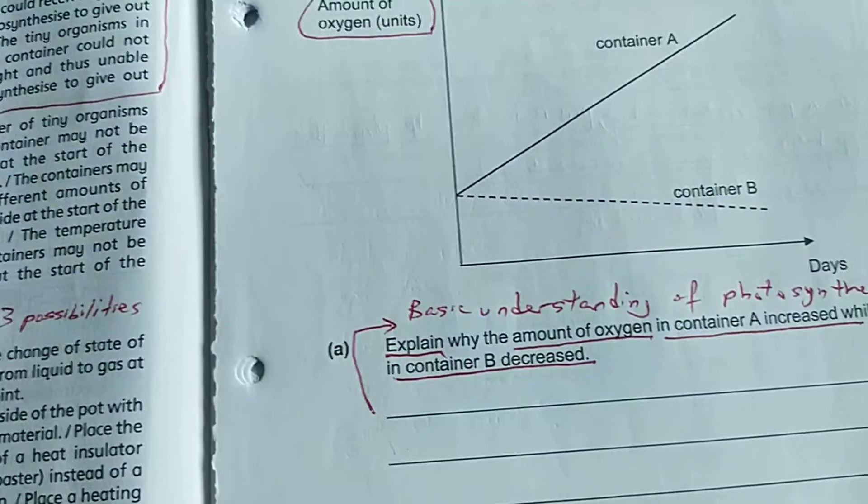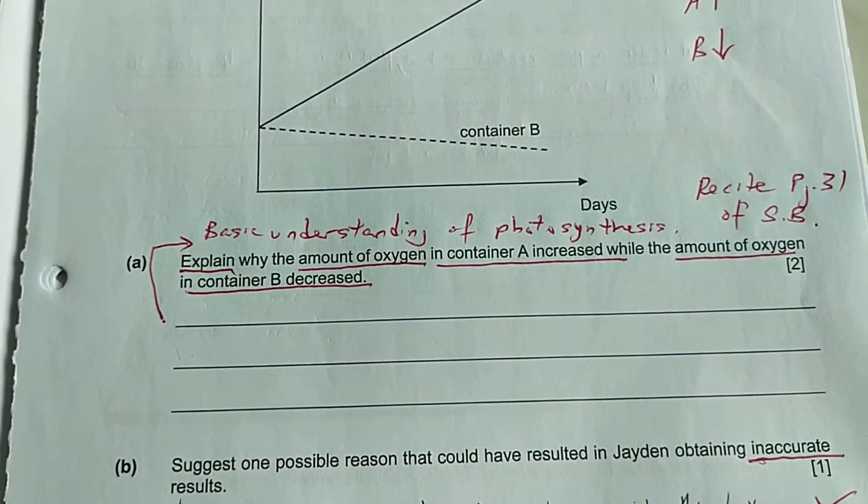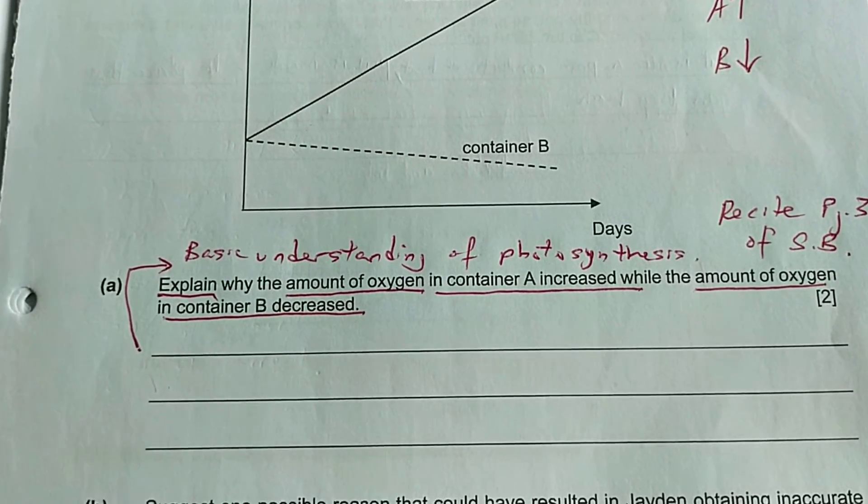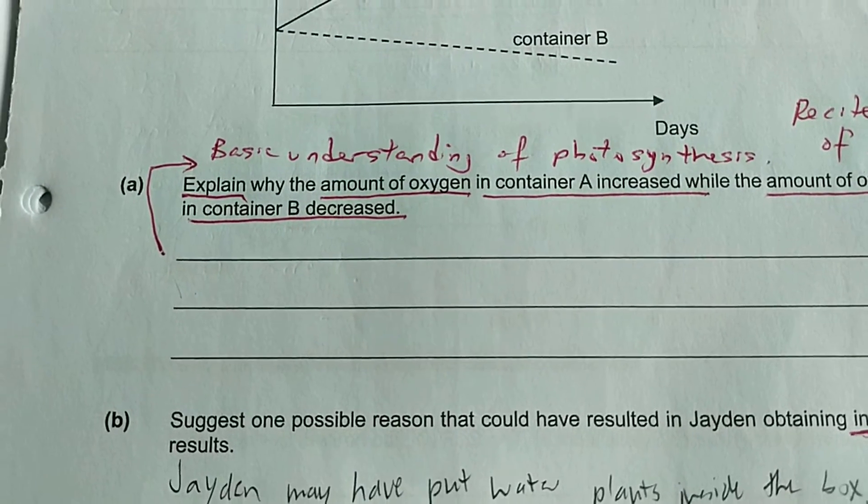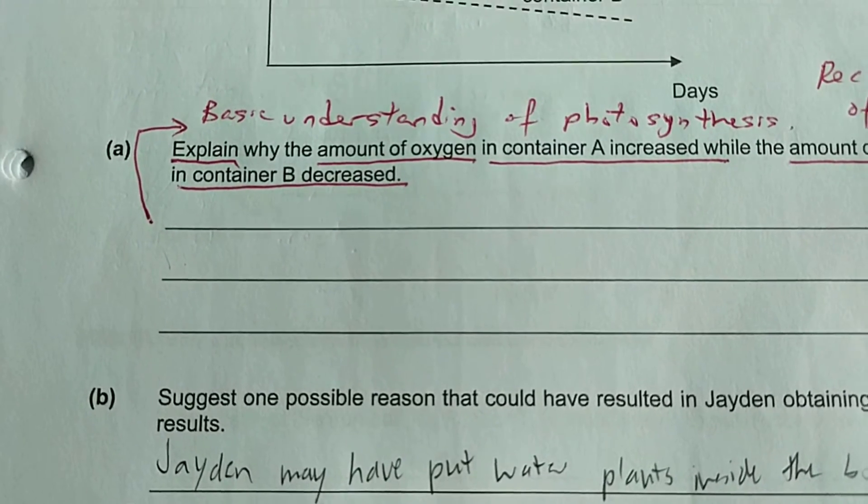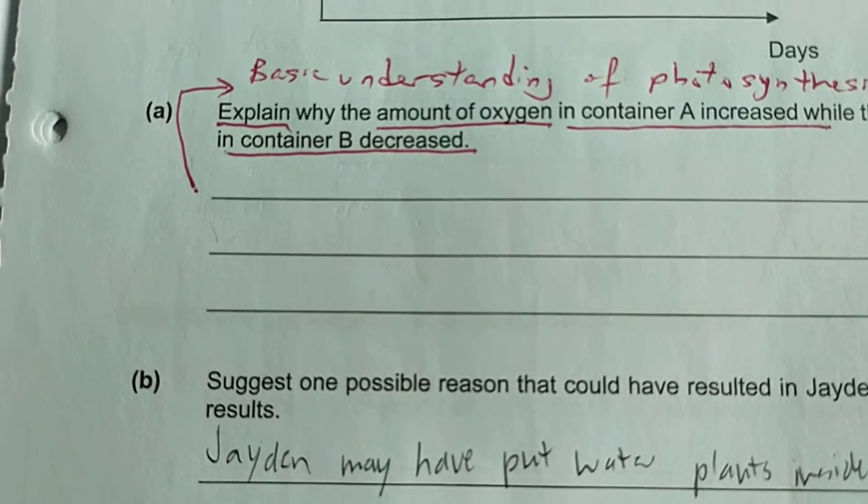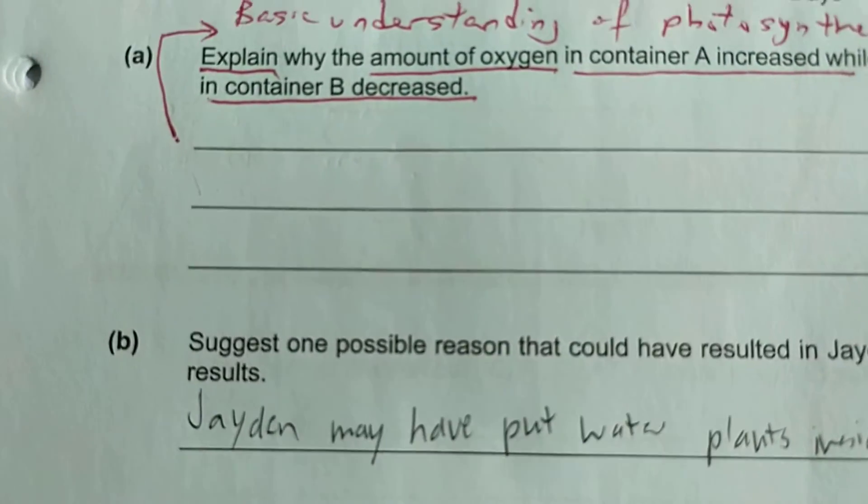The students have to produce this. But in case the student is weak in English, the simplest answer I could guide the student is just write in point form. In A, organism cannot receive light, cannot photosynthesize, cannot produce oxygen.